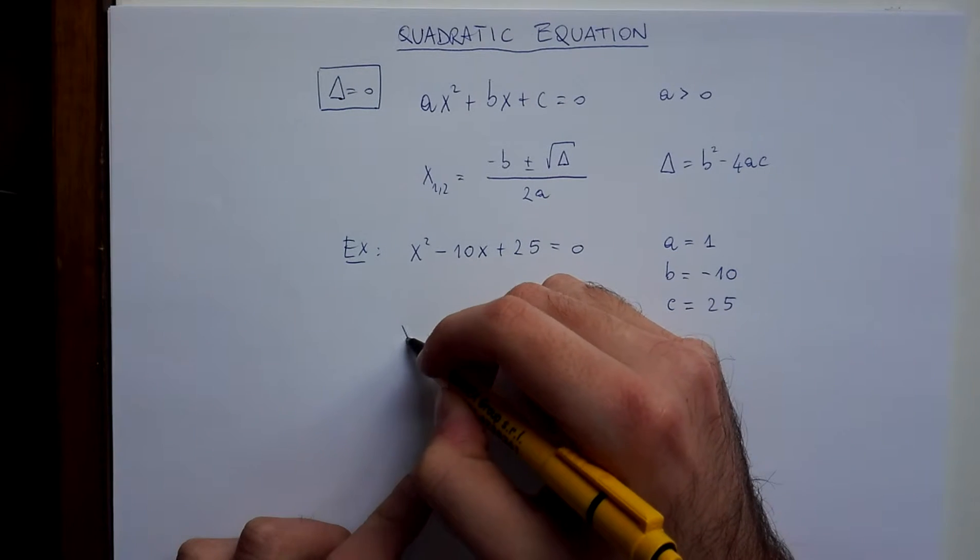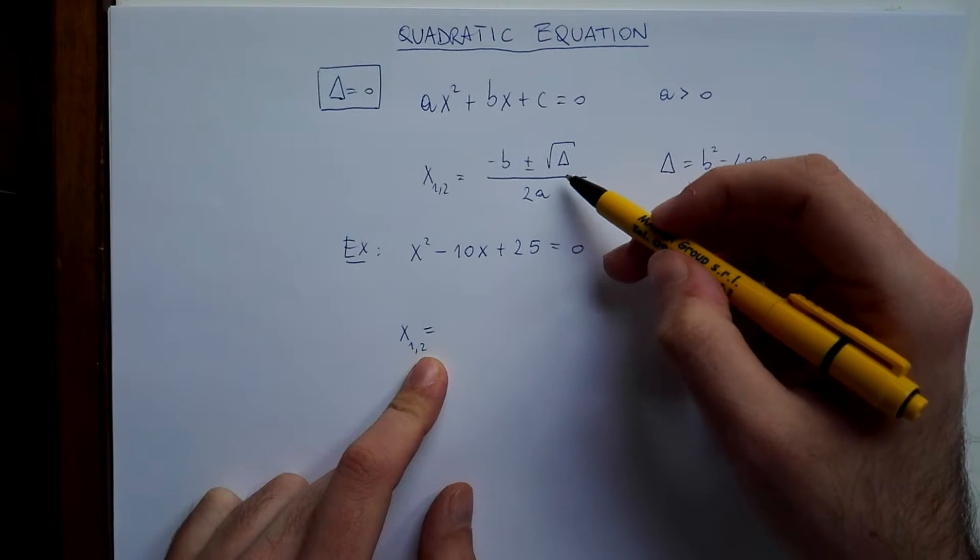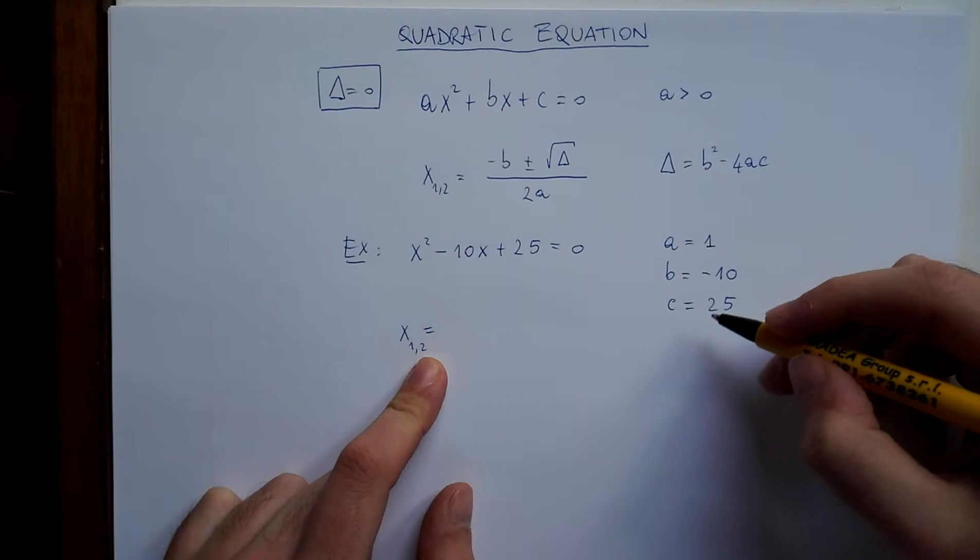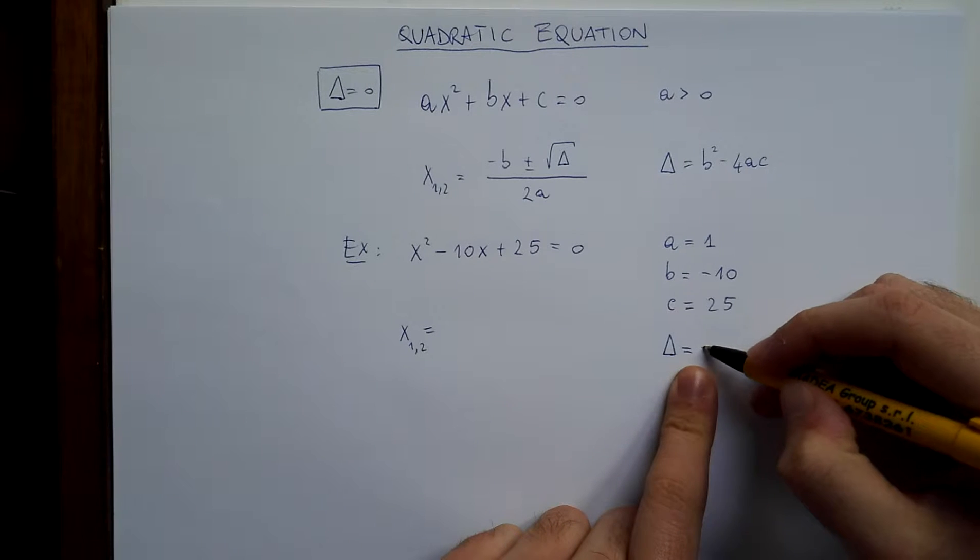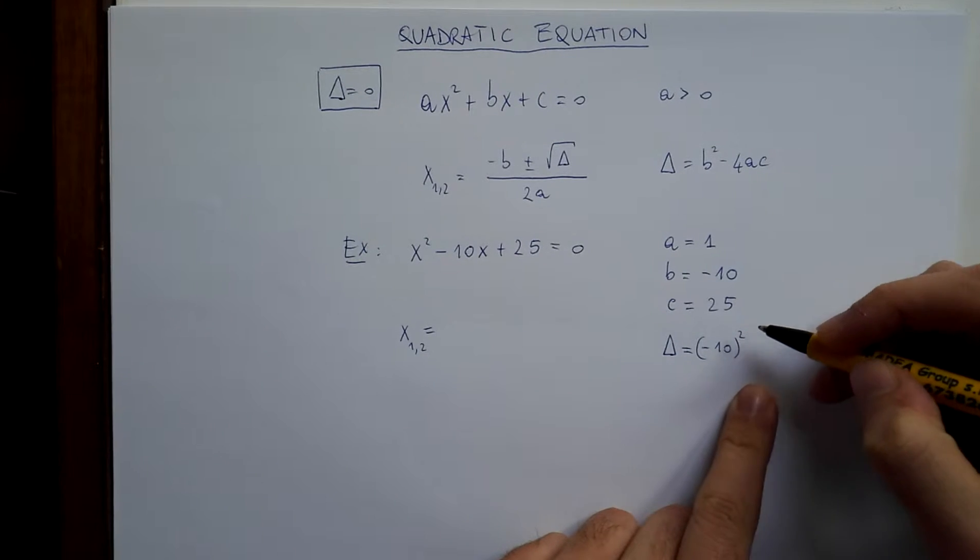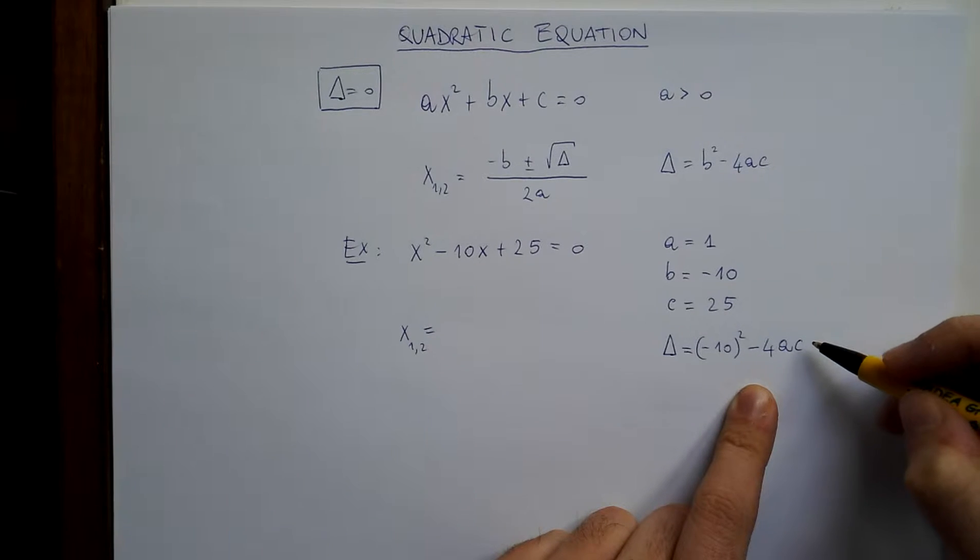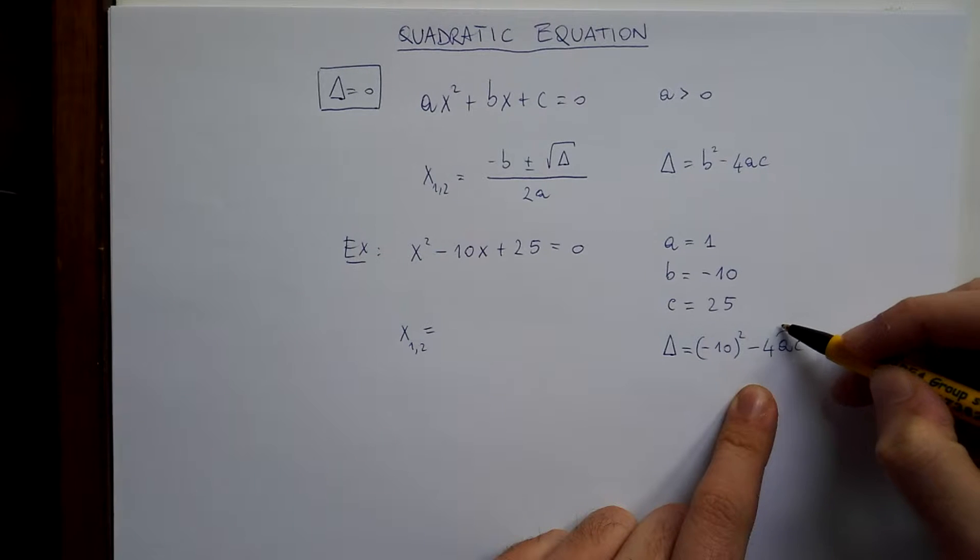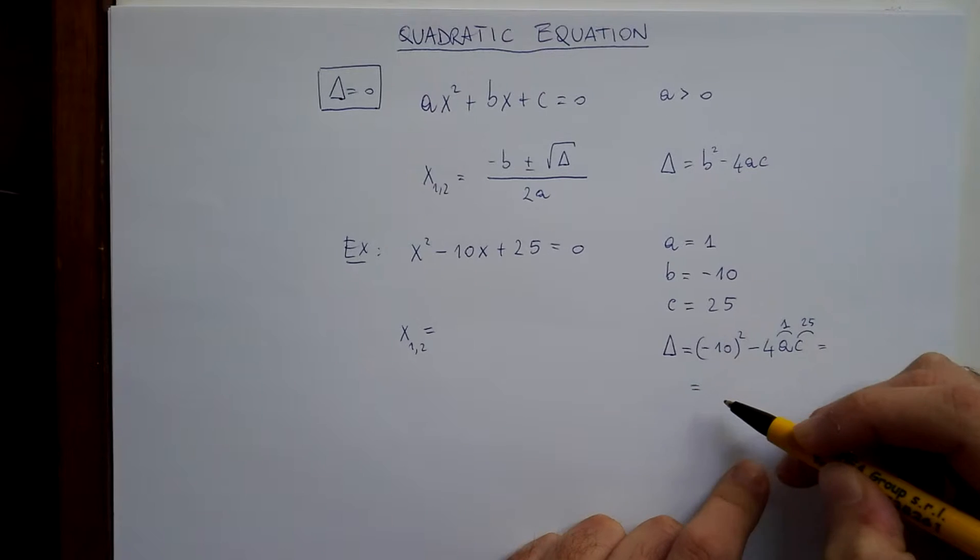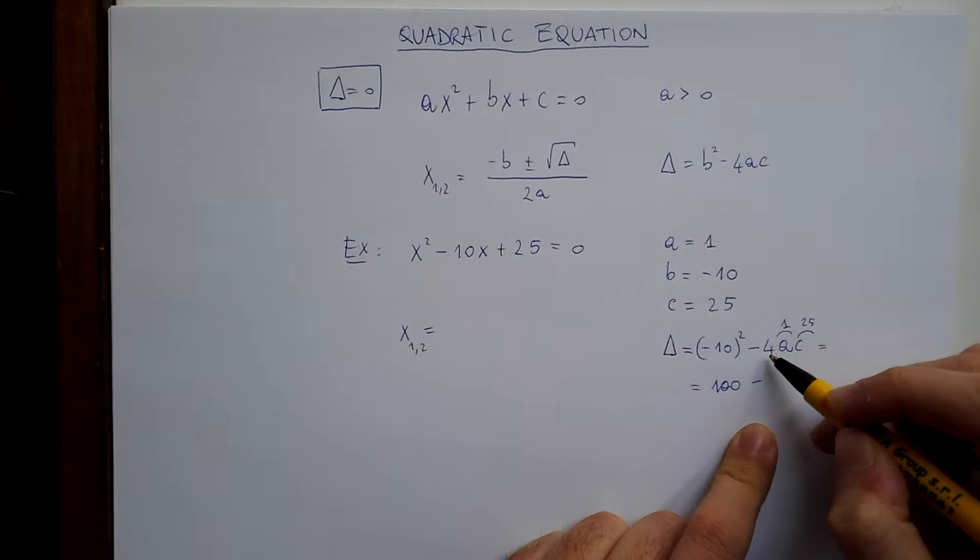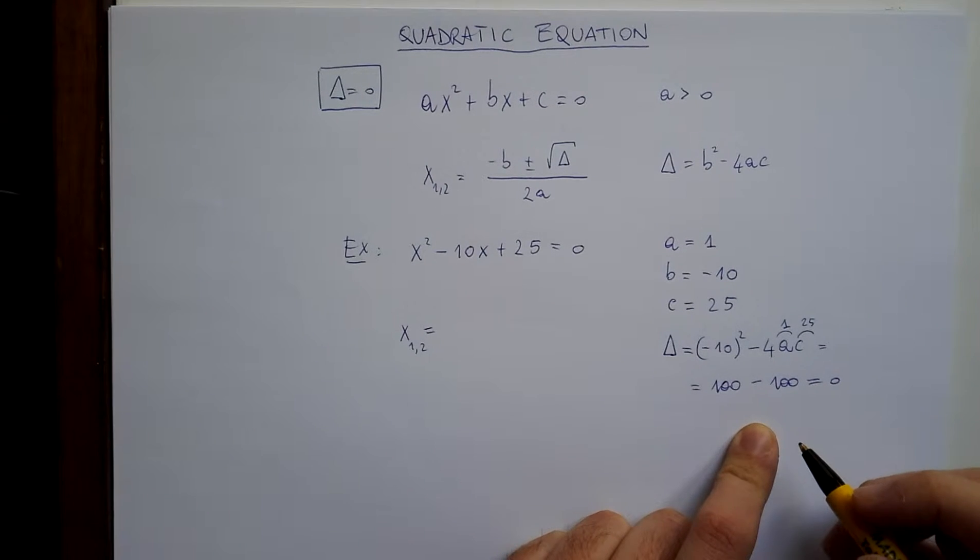Using the formula we have x12 equals... First of all we can compute the delta in this case, which will be zero but I will show you. Delta is b squared, so minus 10 squared, minus 4ac. a is 1 and c is 25. So we have 100 minus 4 times 25, which is 100. So delta is zero.